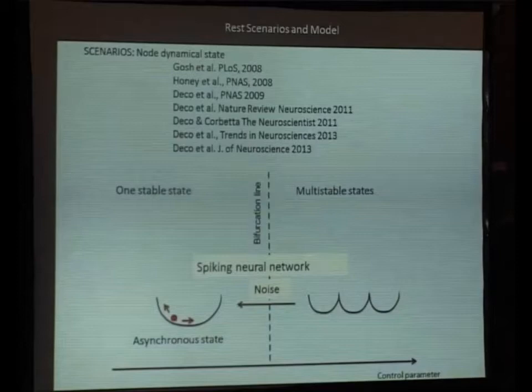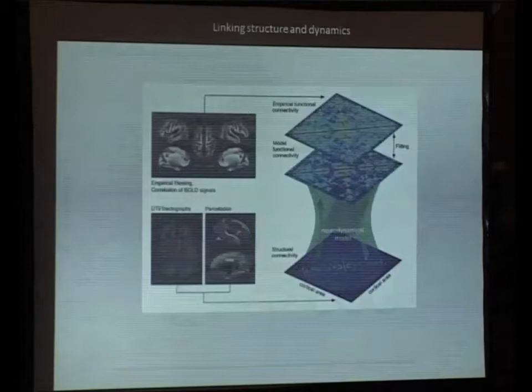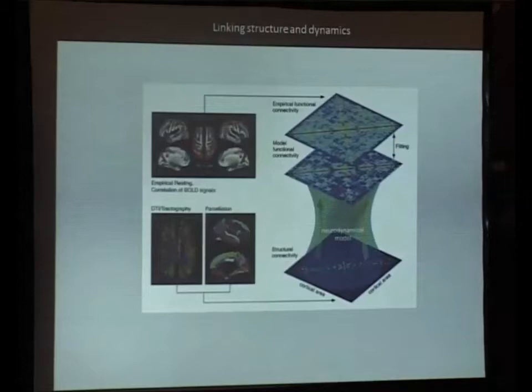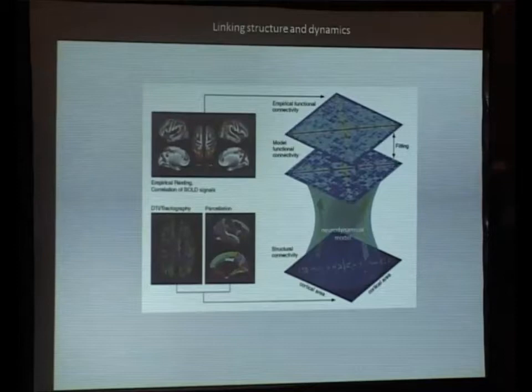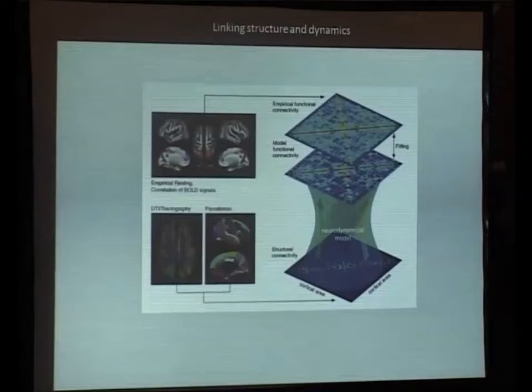Question: How do you compute functional connectivity? Is it just correlations between signals at two points? Answer: In the data, you have BOLD signals in two parcellated areas—relatively big areas, parcellated in 66 areas. You do all the removal of physiological underlying signals so that you try to have the best neuronal signals. Then you just do the correlations between those signals—nothing more. Functional connectivity is nothing more than the correlation matrix between the BOLD signals.